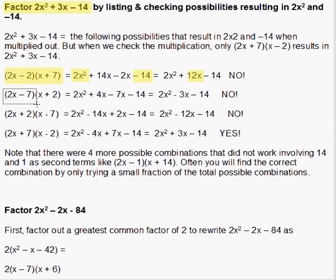Then we check (2x - 7)(x + 2). This also gives us 2x² and -14, but the middle products are 4x and -7x, which again does not work.